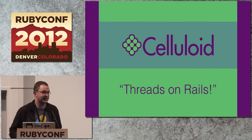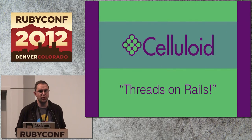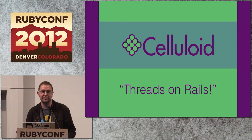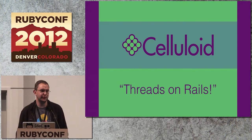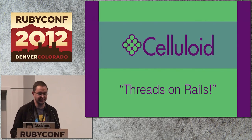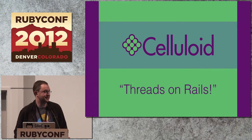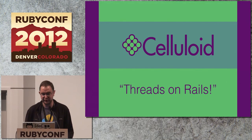I like to think of Celluloid as threads on Rails. For a long time in Ruby, there were no sort of abstractions for building multi-threaded programs — kind of like before Rails, there weren't really good web frameworks for building web applications. So I like to think of Celluloid as the quintessential concurrency framework for Ruby.